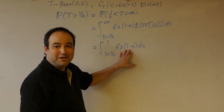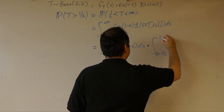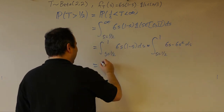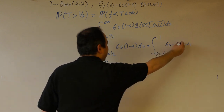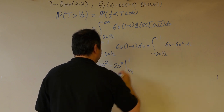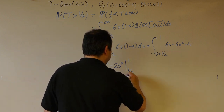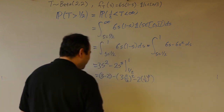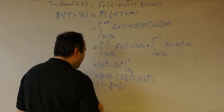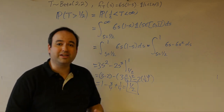The easiest way to anti-differentiate a polynomial like this is to first multiply it out. This equals the integral as s runs from one-half to 1 of 6s minus 6s squared ds. The anti-derivative of 6s is 3s squared, and the anti-derivative of minus 6s squared is minus 2s cubed, evaluated between 1 and one-half. We end up with 3 minus 2 minus 3 times one-half squared minus 2 times one-half cubed, which gives 1 minus three-fourths plus one-fourth, or one-half. That's our probability that this beta value is greater than one-half.